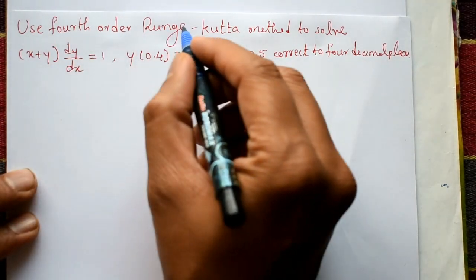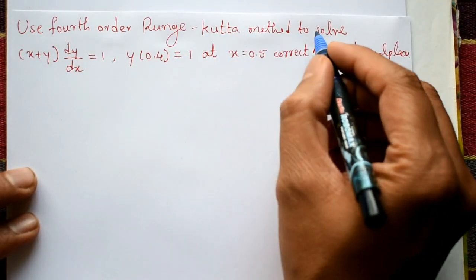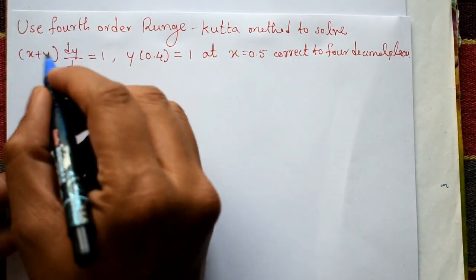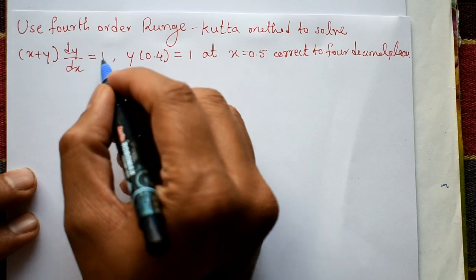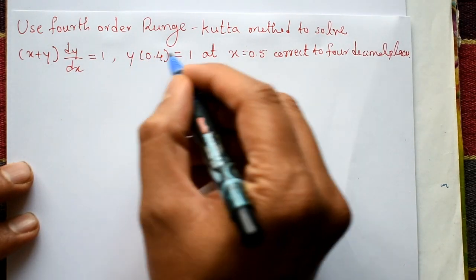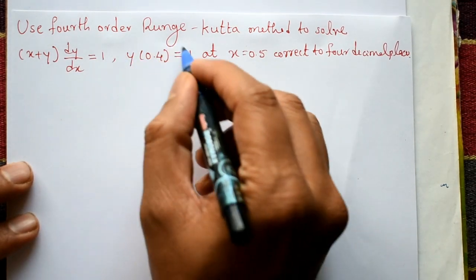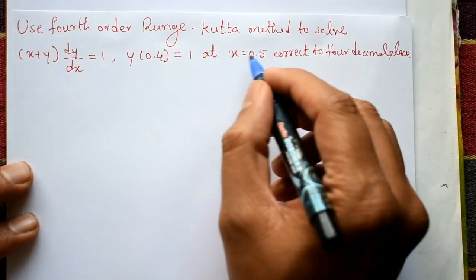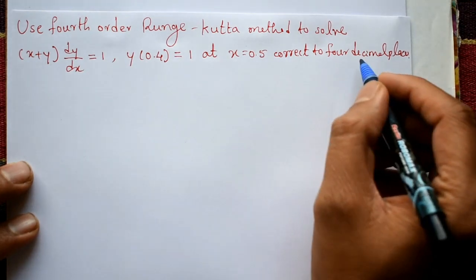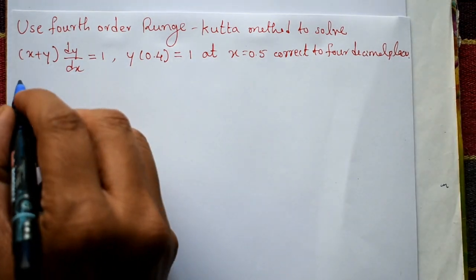Use the 4th order RK method to solve (x + y) dy/dx = 1, with initial condition y(0.4) = 1, to find y(0.5) correct to 4 decimal places.